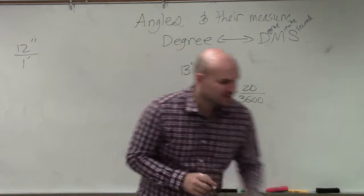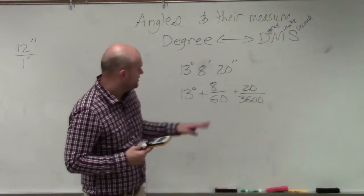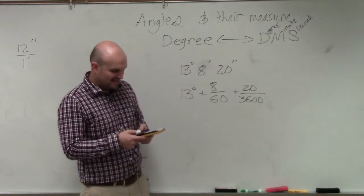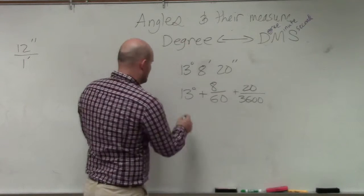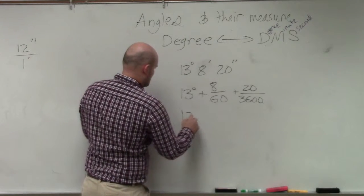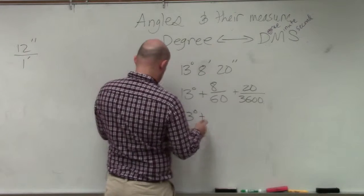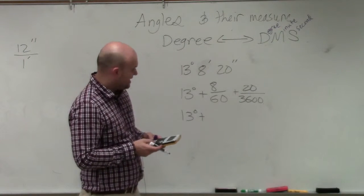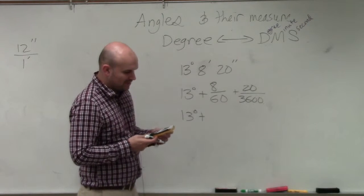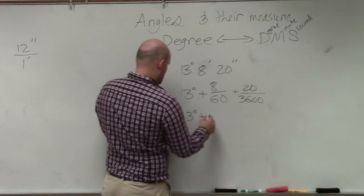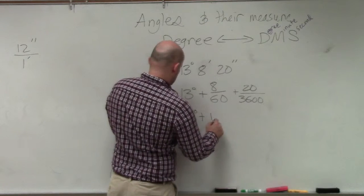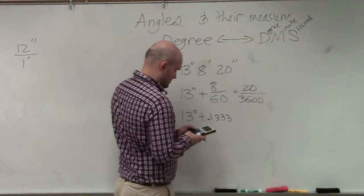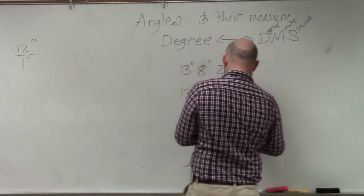So now, all you guys are going to do to figure this one out is you're dividing by 60, and you're dividing by 3,600. So 8 divided by 60 is 0.133. And then you're going to add that to 20 divided by 3,600, which is 0.0056. I'm going to round. This is 0.005.